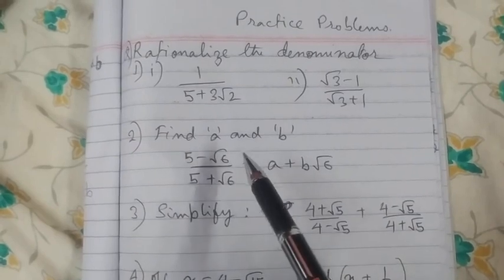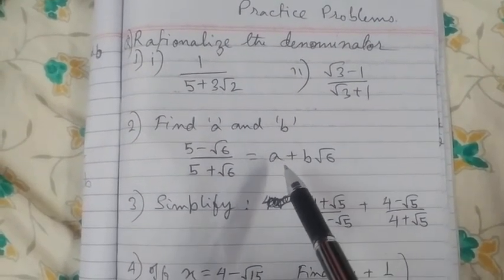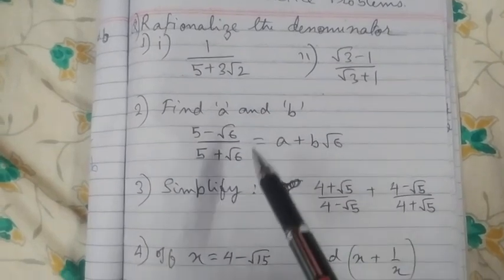Find a and b: 5 minus root 6 by 5 plus root 6 is equal to a plus b root 6. These values are a and b you have to find out by simplifying this.